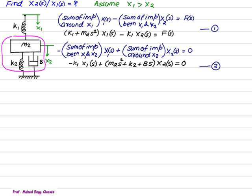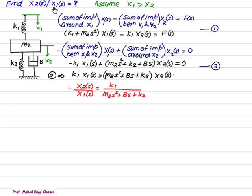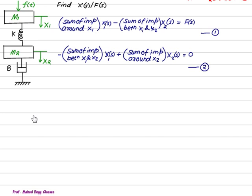Let us call these equation 1 and equation 2. We need to find x2(s)/x1(s), so we use equation 2, because on the left-hand side we have x1 and on the right-hand side we have x2. This term shifts to the right and becomes positive: k1·x1(s) = (m2·s² + b·s + k2)·x2(s). Therefore, the transfer function x2(s)/x1(s) = k1 / (m2·s² + b·s + k2). This is the required transfer function.